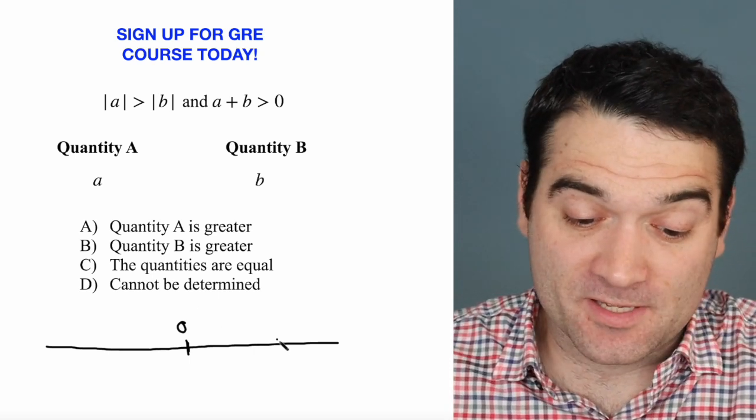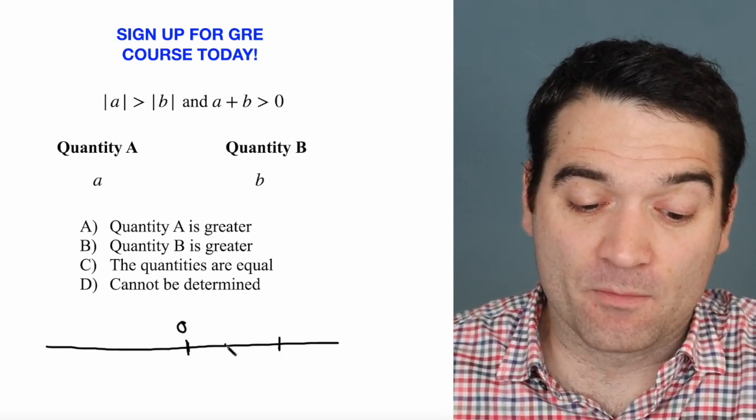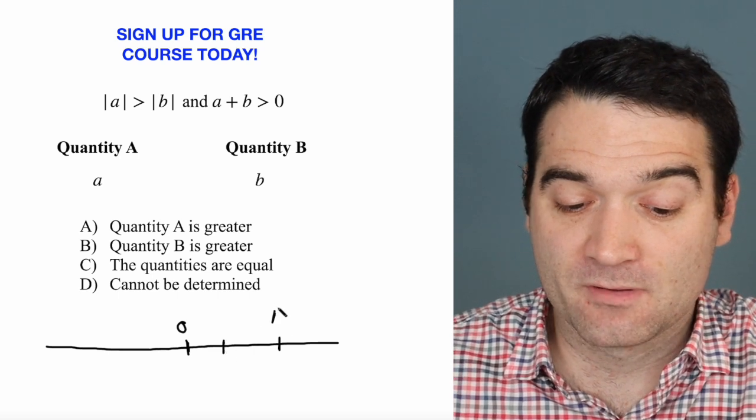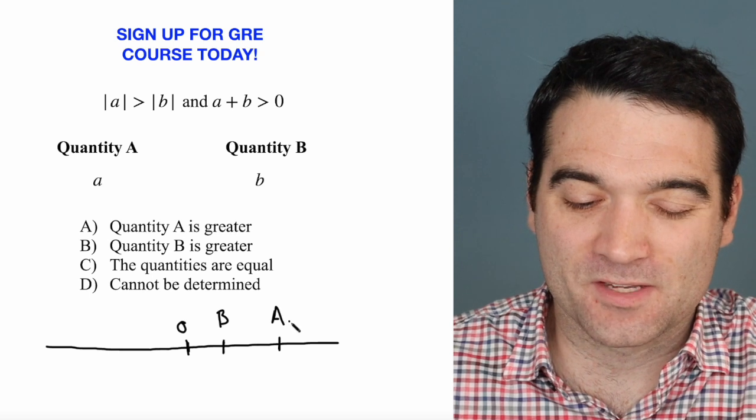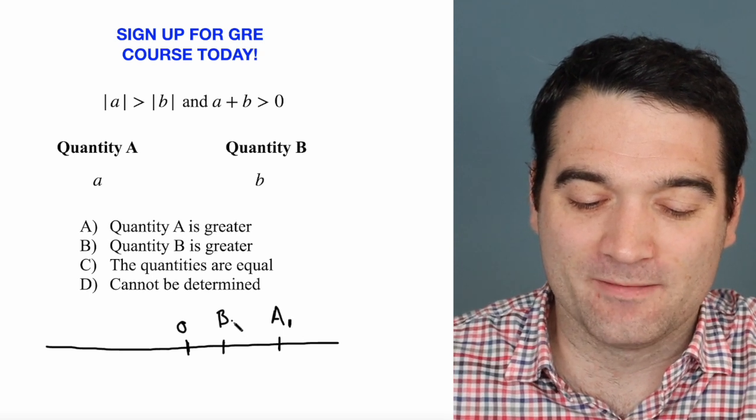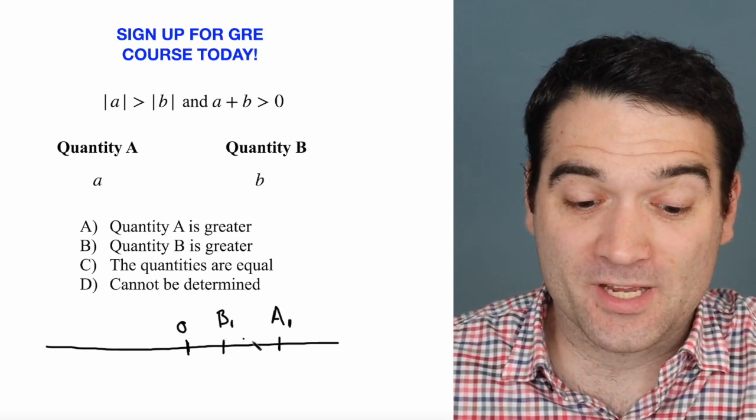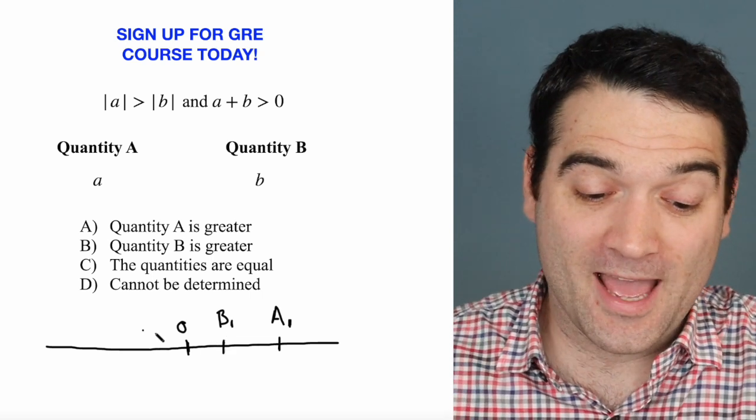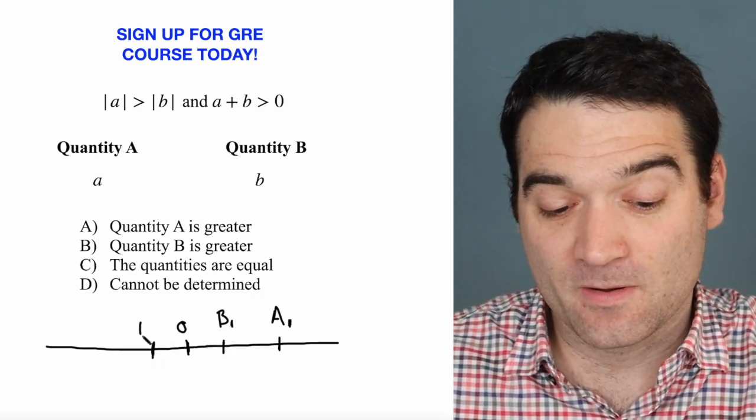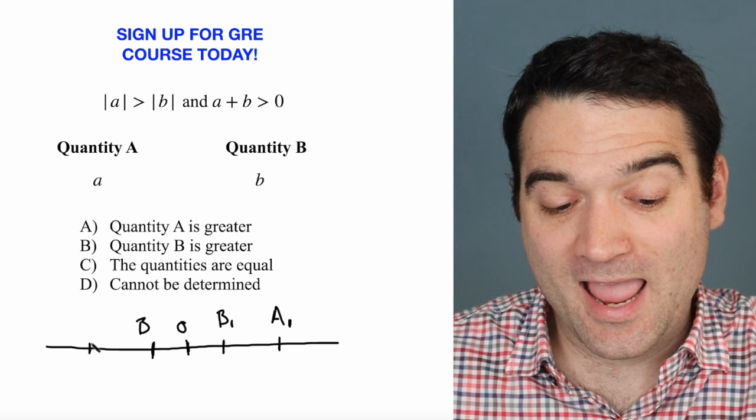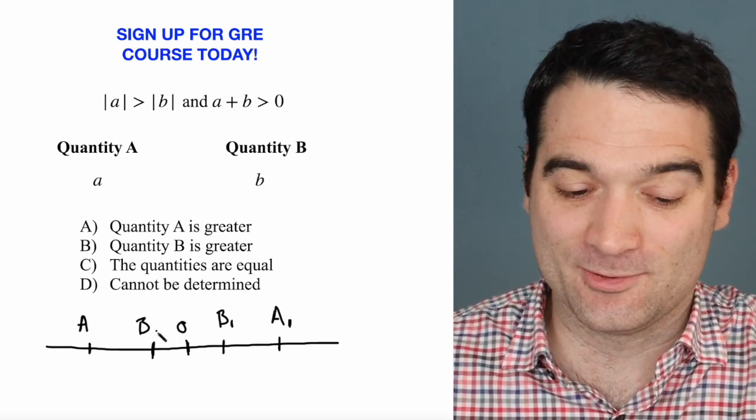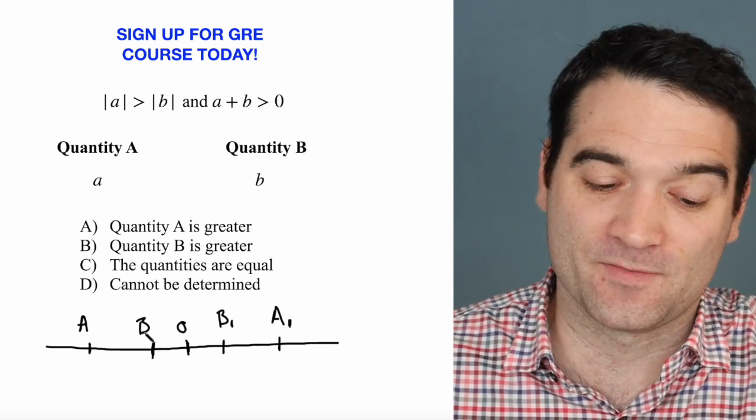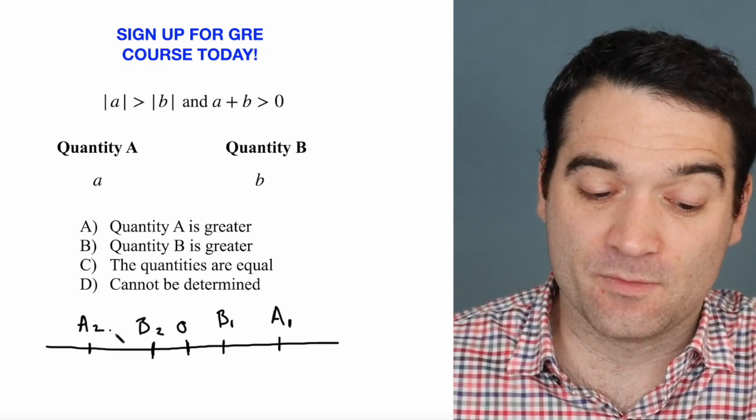It could mean, for instance, that A and B are both positive numbers, and A is just greater than B. I'll call this case number one, A1 and B1. Of course, it could also mean that B is a negative number, and A is an even more negative number. So when we take the absolute values, absolute value of A is still greater than the absolute value of B. I'll call this A2 and B2.